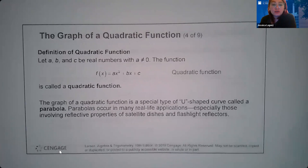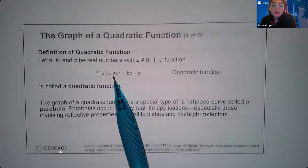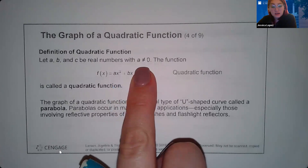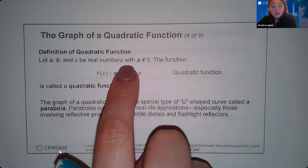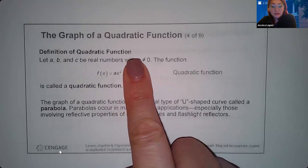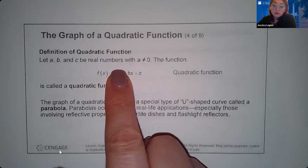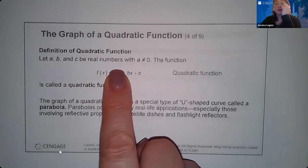The definition of a quadratic function requires that a cannot equal zero — you must have an x squared term. You can be missing the constant and still be called a quadratic. You could be missing the x term and still be called a quadratic. You could even be missing both and still be called a quadratic. The only thing you cannot be missing is the x squared term, because then it's no longer a quadratic — it becomes linear or constant.